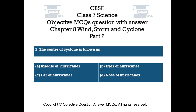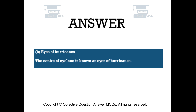Question number 2. The center of a cyclone is known as — Option A: middle of hurricanes. Option B: eyes of hurricanes. Option C: ear of hurricanes. Option D: nose of hurricanes. The right answer is Option B: eyes of hurricanes. The center of a cyclone is known as the eyes of hurricanes.